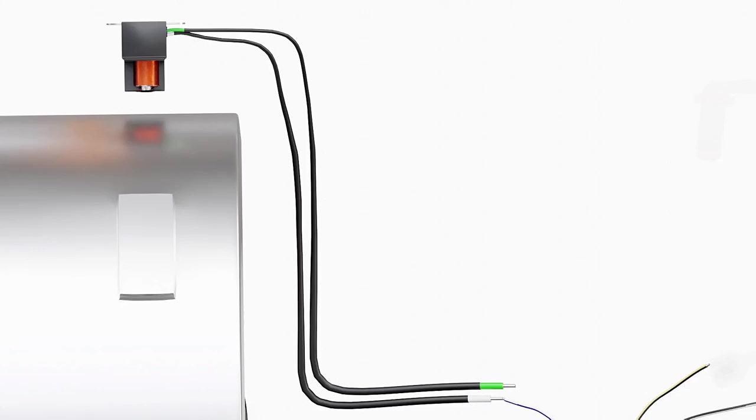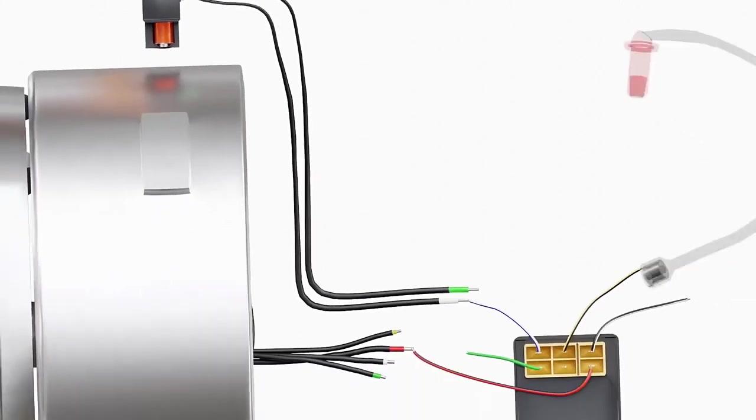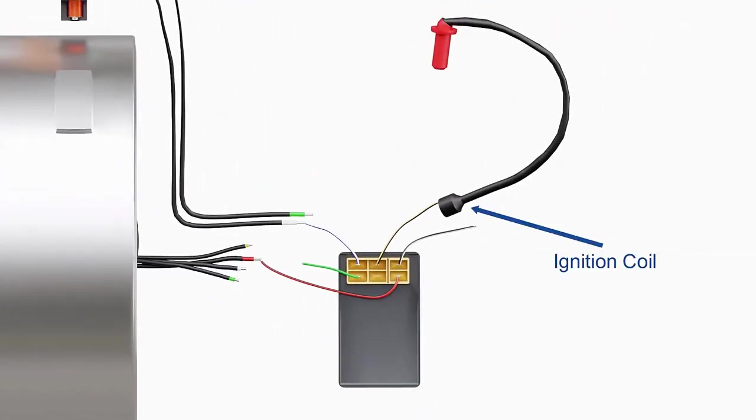This will dump all the charge from the capacitor through the output of the CDI unit. To increase the voltage further, an ignition coil is used.